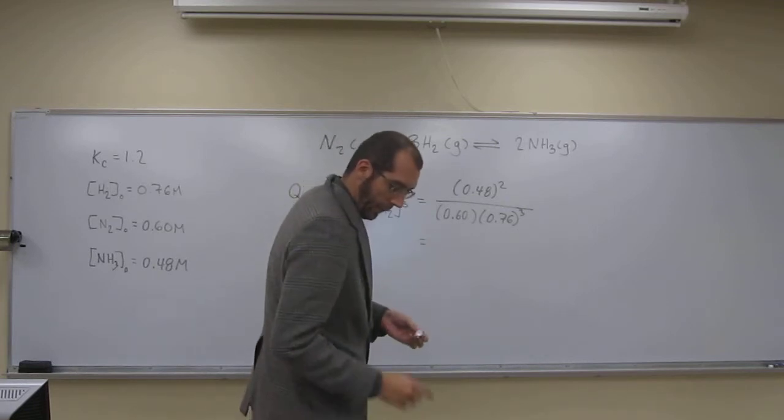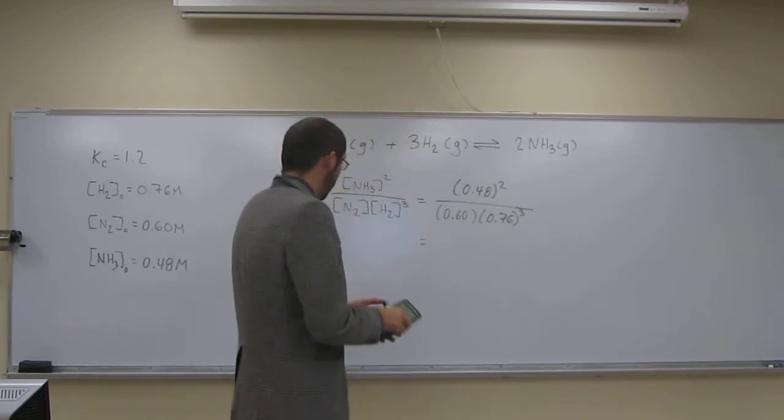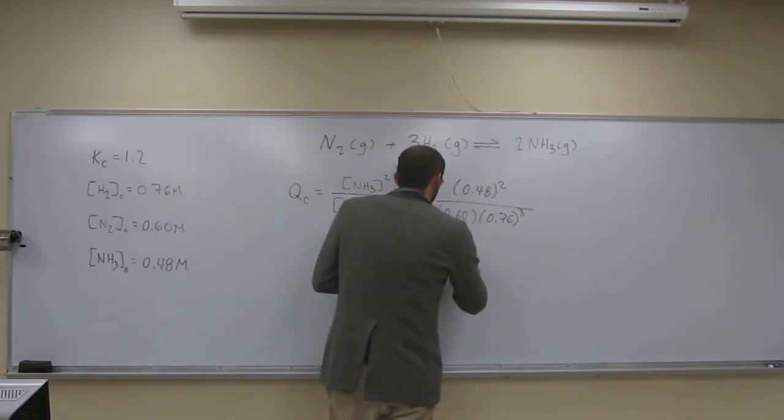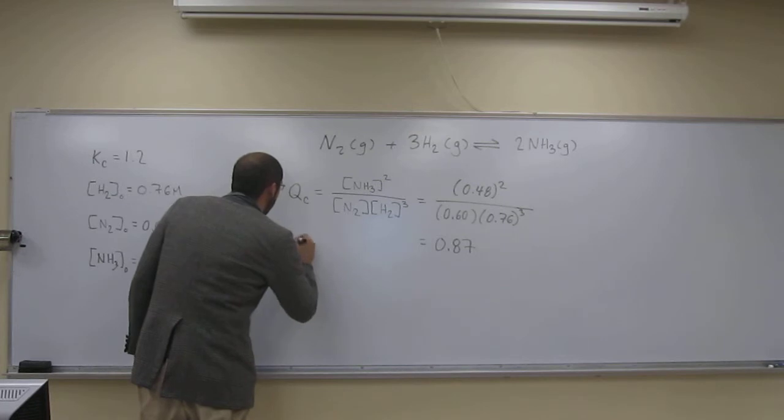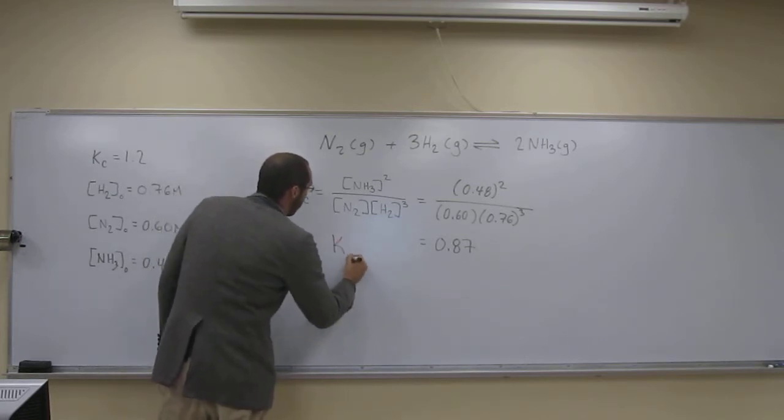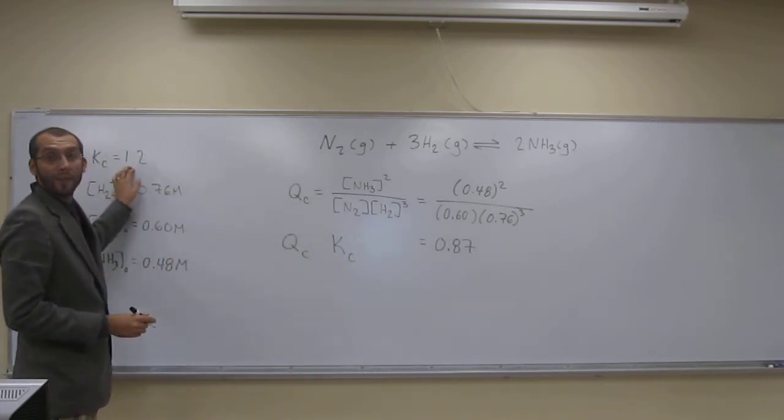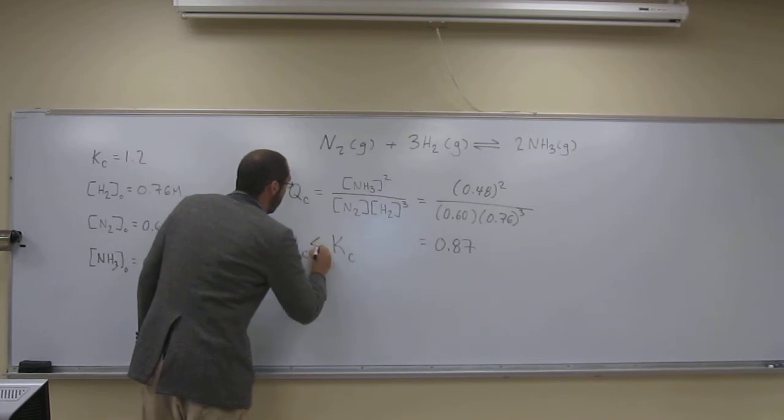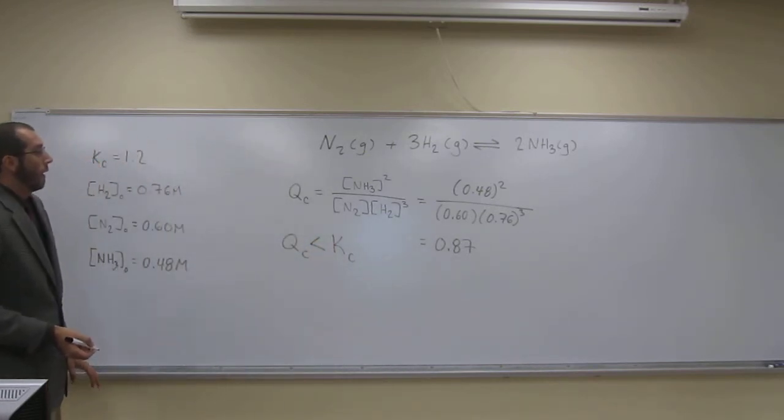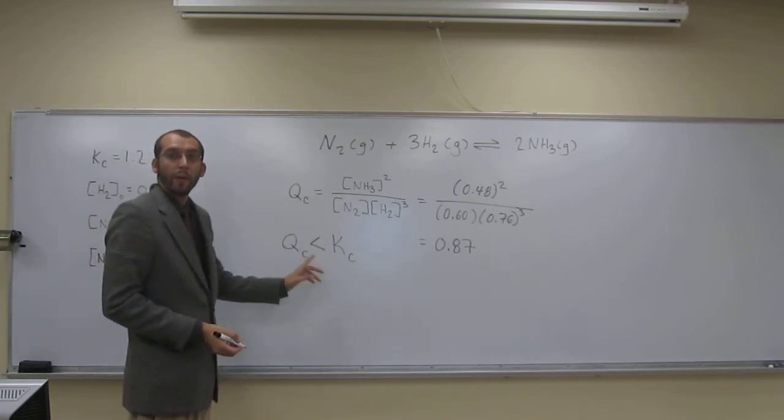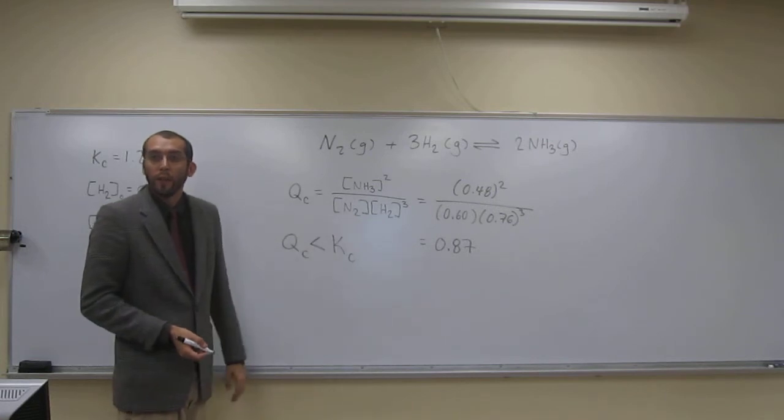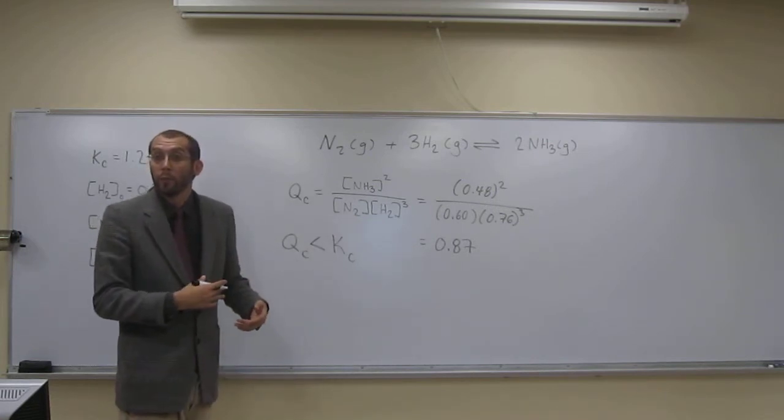And the number I got was 0.81. So if we look - Qc and Kc - if we're going to compare them, what we find is that Kc is bigger than Qc. In this case, whenever Q is smaller than K, that means the reaction has to go to the right to get to equilibrium.